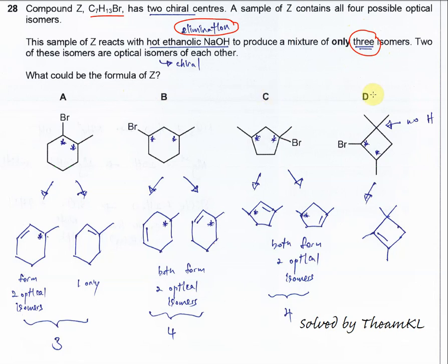Two of these isomers are optical isomers to each other, which means one of them has a chiral center — that's why it can form optical isomers.